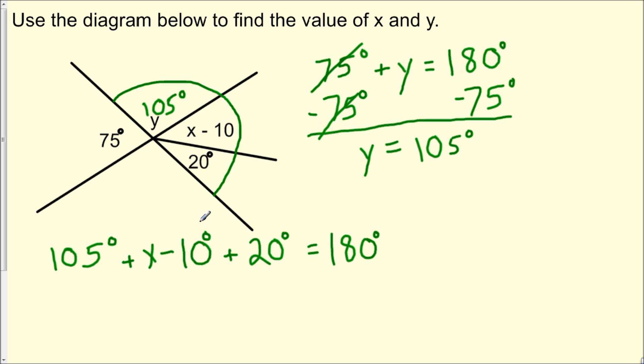So now what we could do is combine like terms. We have 105 minus 10 plus 20. Well, 105 minus 10 is 95, and 95 plus 20 is 115. So now what we could set up is x plus 115 degrees equals 180 degrees.